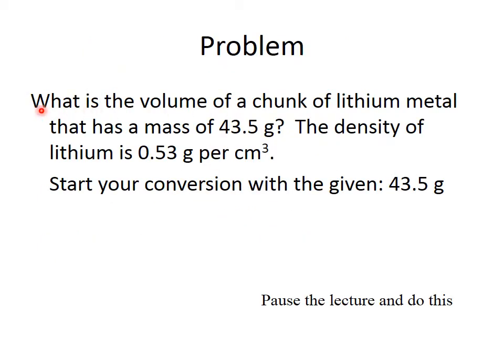So here's a problem. What is the volume of a chunk of lithium metal that has a mass of 43.5 grams, and the density is 0.53 grams per centimeter cubed? The hint is, start your conversion with the given measurement, which is 43.5 grams. Listen to this. Never start a density problem with the density. There's a 50% chance that you will end up with upside-down units. So it's best to start with the measurement that is not density. So go ahead and pause this lecture and do the problem, and then restart it to check your answer.